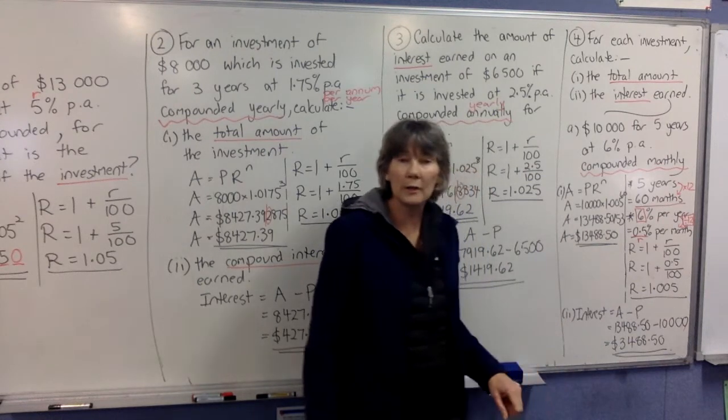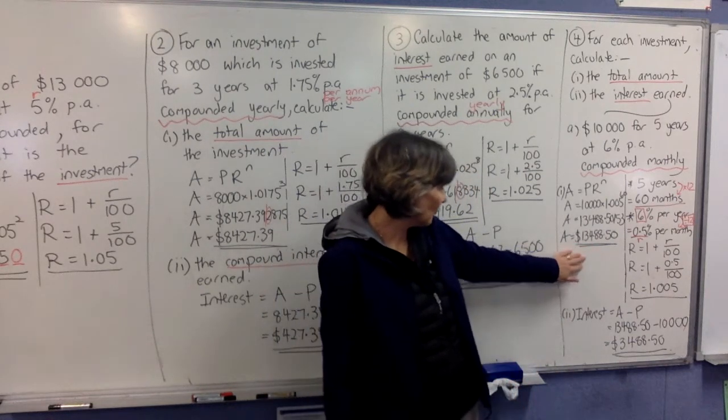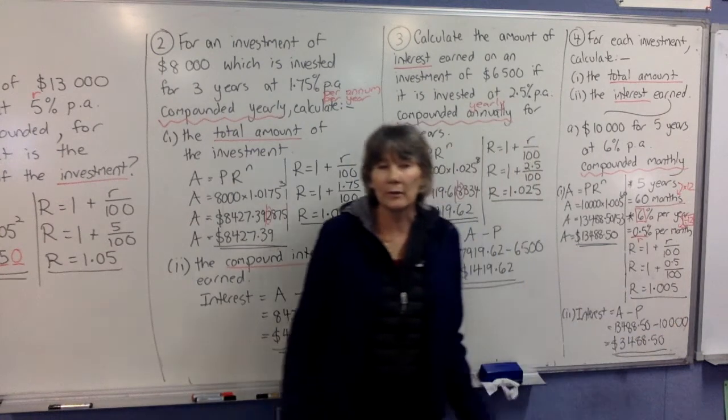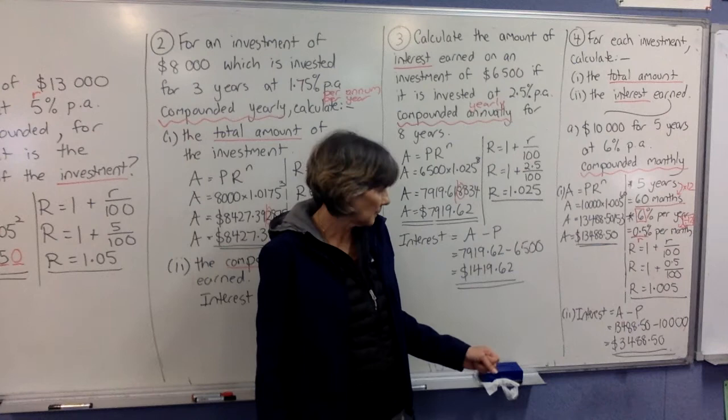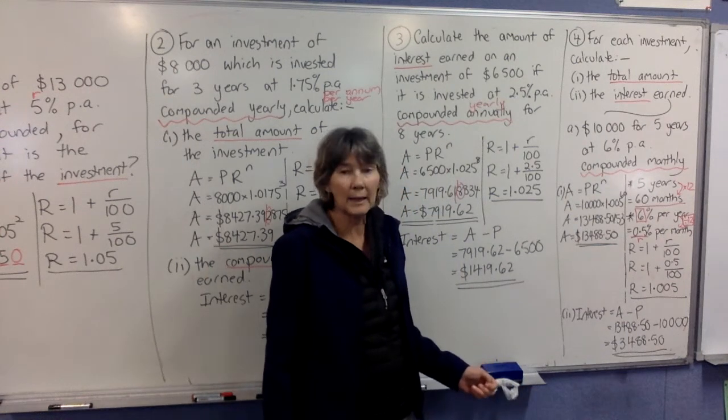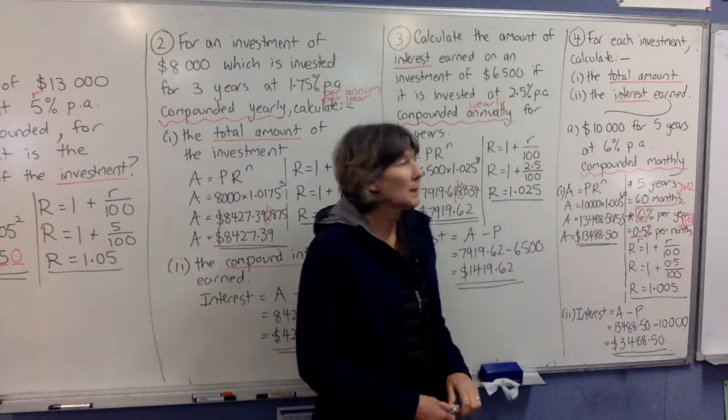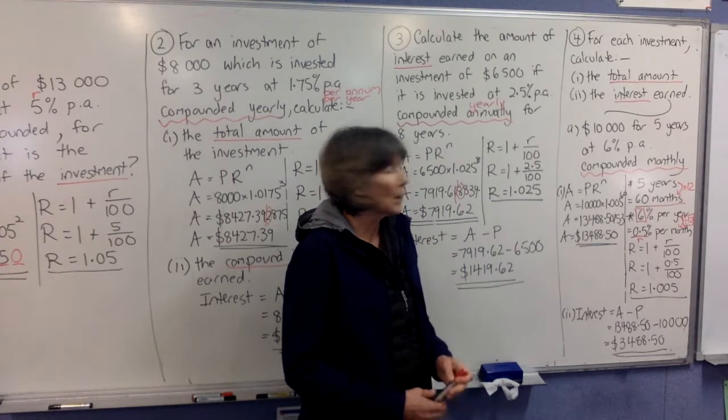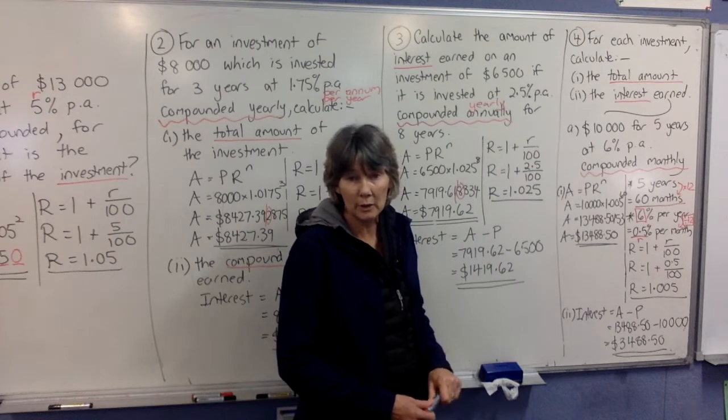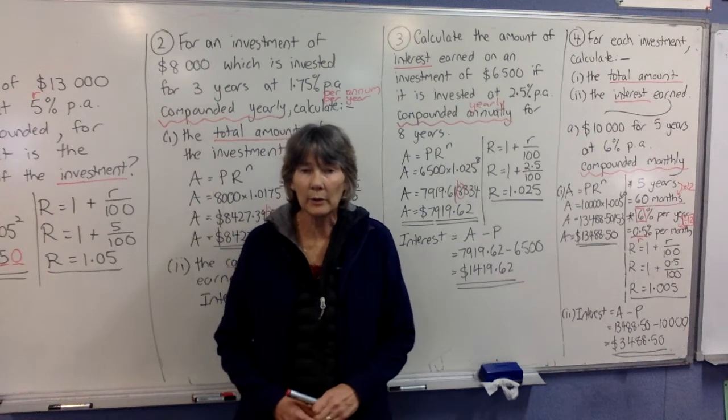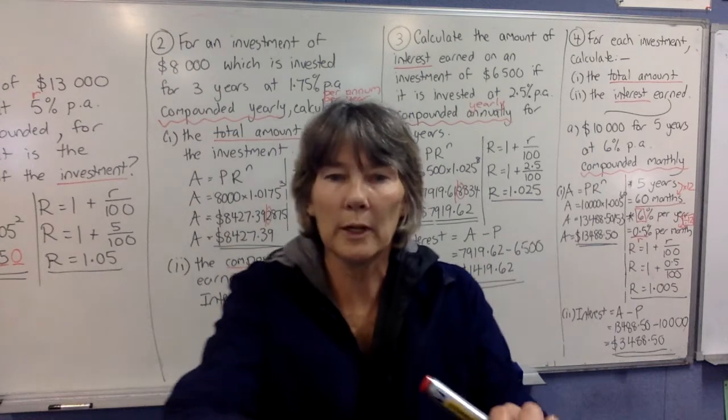In part two, to find the interest, we're going to take that final value of our investment, take off the original value of the investment, which was $10,000, and you've just earned $3,488.50 in interest, which is not too bad over five years for only $10,000. Okay, so we're going to do some more practice with those harder ones in the next video, and keep working.